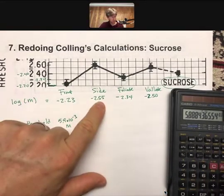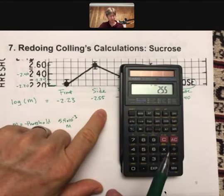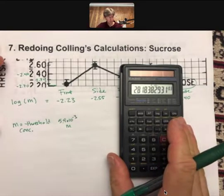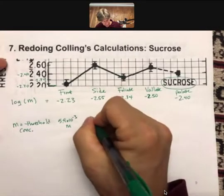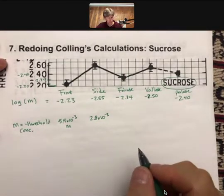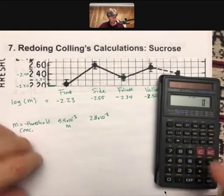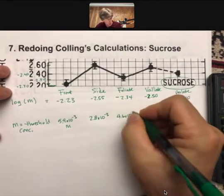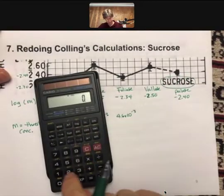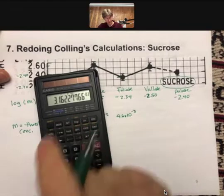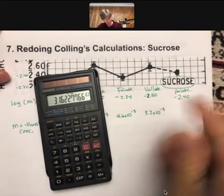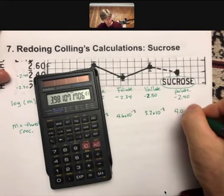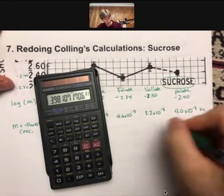This number is minus 2.55, so I put in 2.55, do minus, shift 10-to-the-x, and I get 2.8 times 10 to the minus 3. Then 2.34 shift-log gives 4.6 times 10 to the minus 3; 2.5 minus shift-log is 3.2 times 10 to the minus 3; and 2.40 minus shift-log is 4.0 times 10 to the minus 3. These are all molarities.